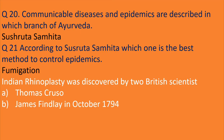Communicable diseases and epidemics are described in Sushruta Samhita. According to Sushruta Samhita, which is the best method to control epidemics? That is fumigation. You must be aware that to control COVID-19, the Government of India also performed fumigation many times to control that pandemic — showing how advanced Ayurveda was even in ancient times.